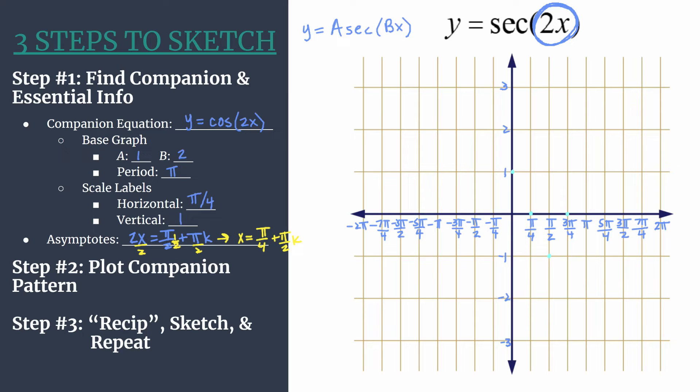So this is our companion equation graph, y equals cosine 2x. If you want, you can sketch in the actual cosine graph. This isn't necessary, but you can see that's one cycle of cosine 2x.